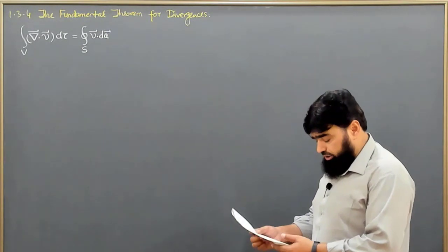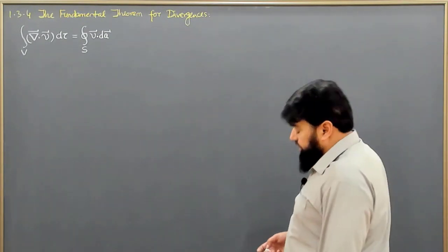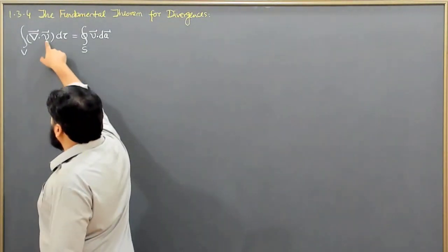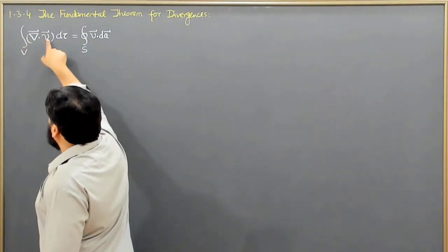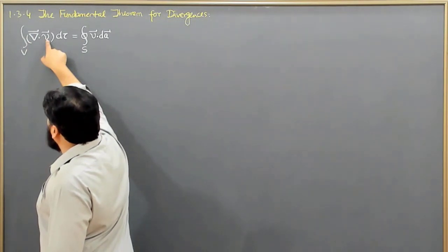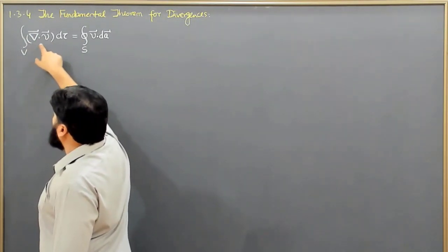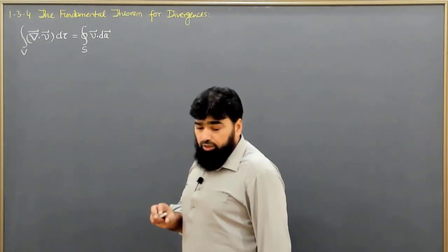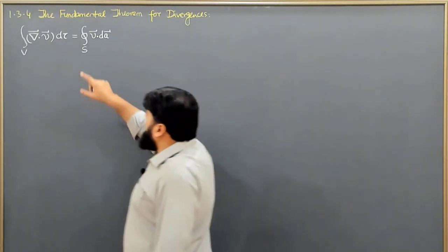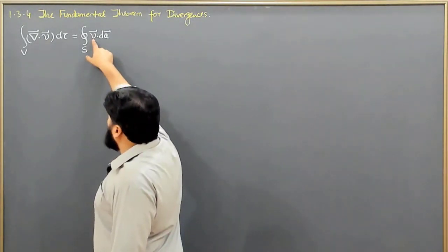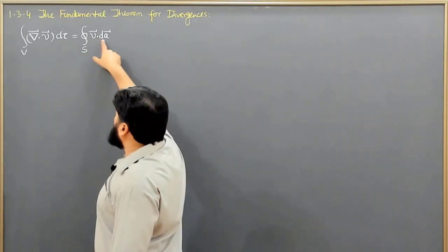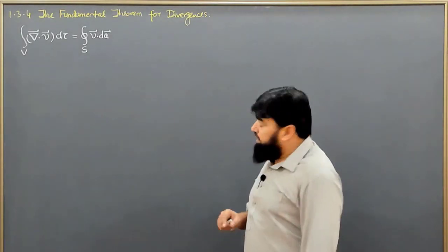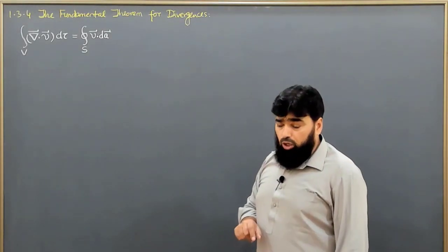What this means is that if we have a vector function — a physical quantity — and we want to know how much it is diverging in a given volume, we integrate that divergence. This will be equal to taking that quantity itself and computing its dot product with the cross-sectional area, which gives us the flux of that quantity through the closed surface.